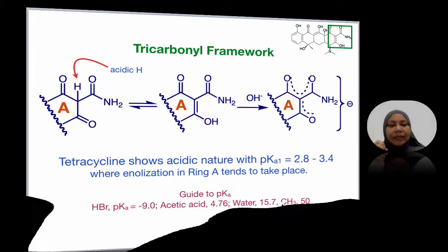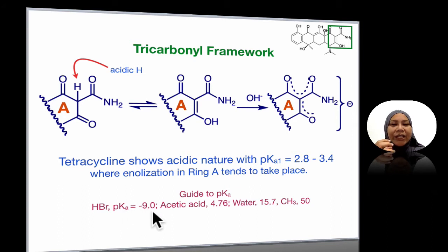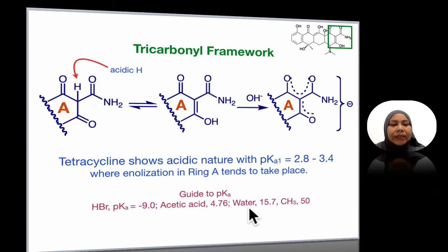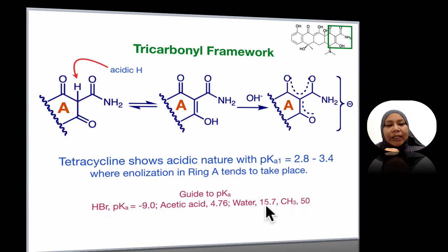If you take this pKa and compare it to what you already know: HBr and HCl are really strong acids — the pKa of HBr is minus 9. Acetic acid is a weak acid with a pKa of about 4.76. Water is actually acidic in nature, with a pKa of 15.7. And a methyl group — it's really hard to lose a proton because the pKa is 50. So the proton in HBr is much easier to lose compared to the hydrogen in a methyl group or even in water.